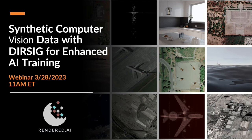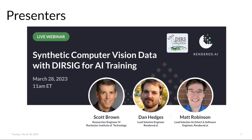Hello everyone, thank you for joining. This is the webinar: Synthetic Computer Vision Data with DIRSIG for Enhanced AI Training. My name is Dan Hedges, I'm a lead solution architect at Rendered AI, joined by Matt Robertson, lead solution architect and senior software engineer at Rendered AI. We're part of the customer success team, working with customers to push the bounds of what's capable with synthetic data. We're also joined by Scott Brown, a researcher and engineer at the DIRSIG lab at RIT, and leader of the modeling and simulation group there.